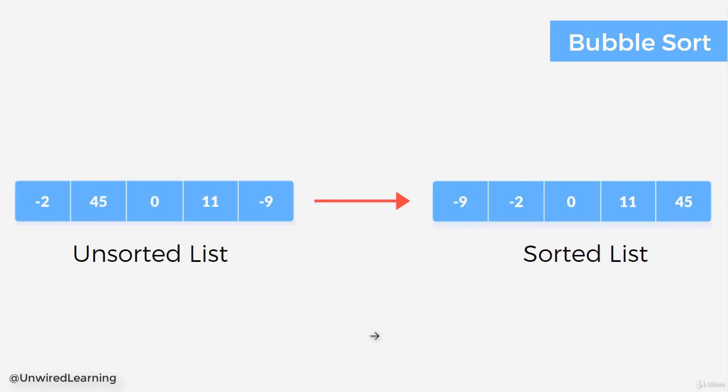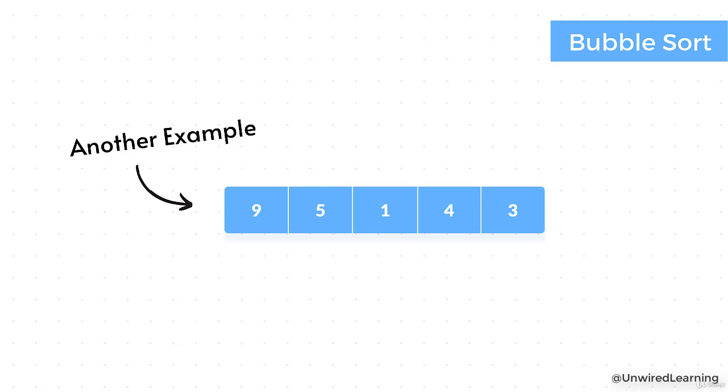We call it bubble sort because we pop out bubble of maximum value with each iteration. In the next lecture let us take another example of bubble sort and understand through some graphic and visualization.